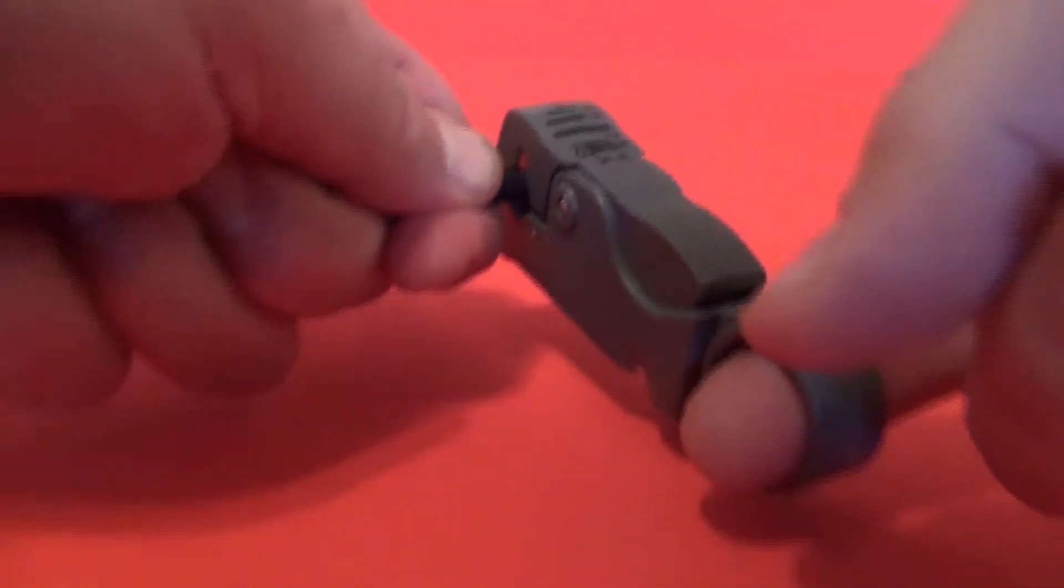First, insert your cable into the coaxial stripper. Turn it clockwise approximately three to five times.